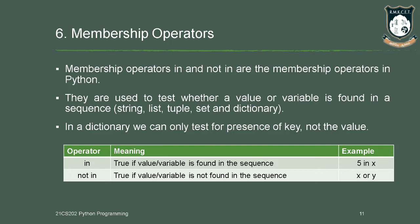We have two membership operators: IN and NOT IN. IN will return true if the value or variable is found in the sequence. NOT IN will return true if the value is not present in the sequence. From the name itself we can understand the working principle of these operators.